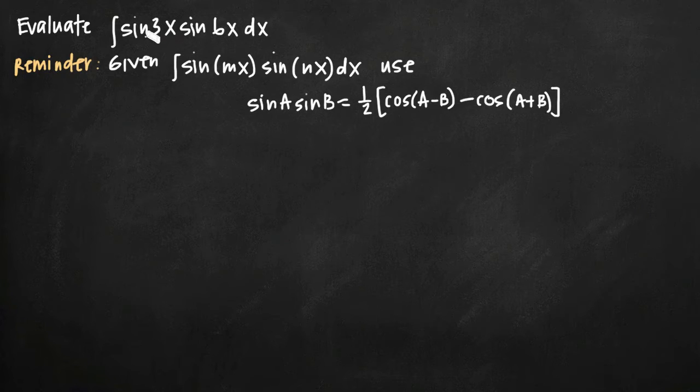So when you have the product of two sine functions like sine of a times sine of b, regardless of the values of a and b, you can simplify that to one half times cosine of a minus b minus cosine of a plus b.